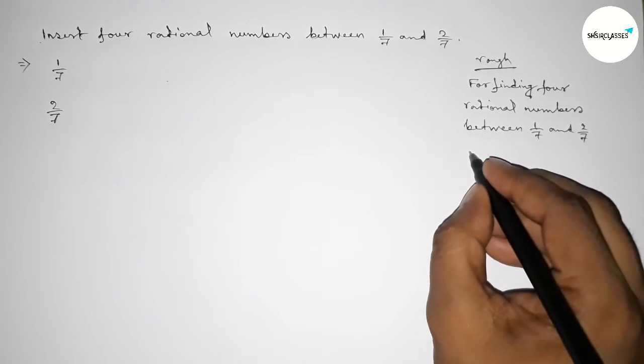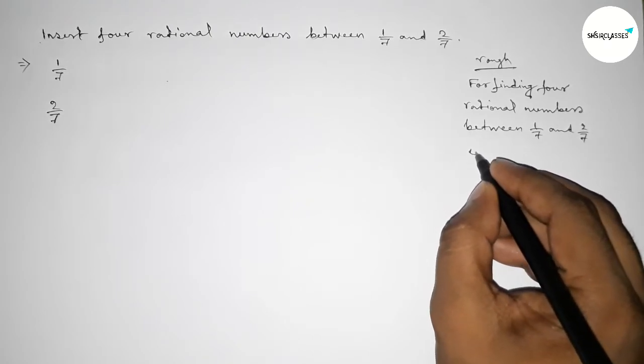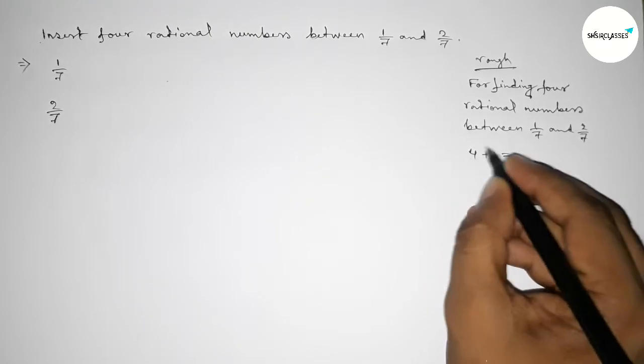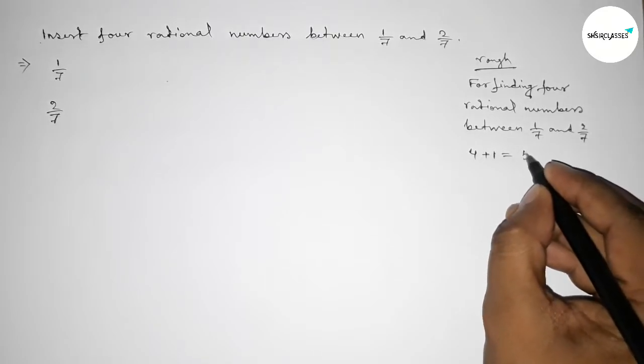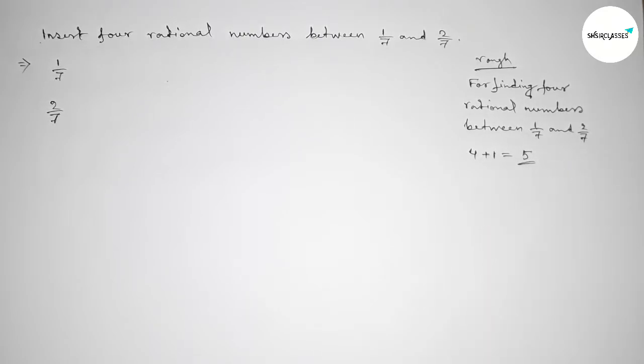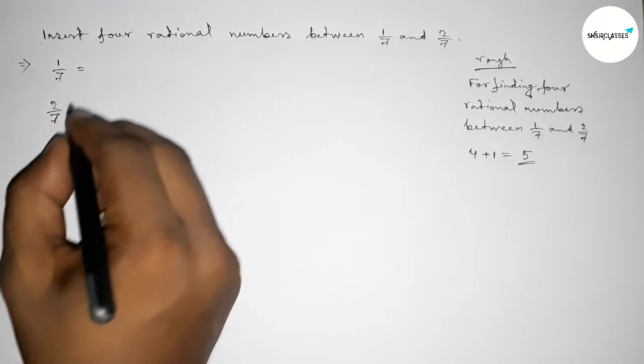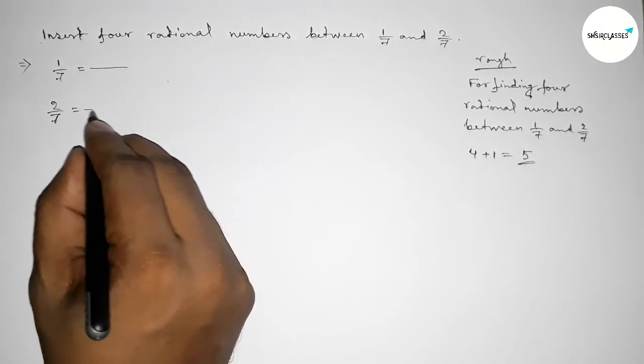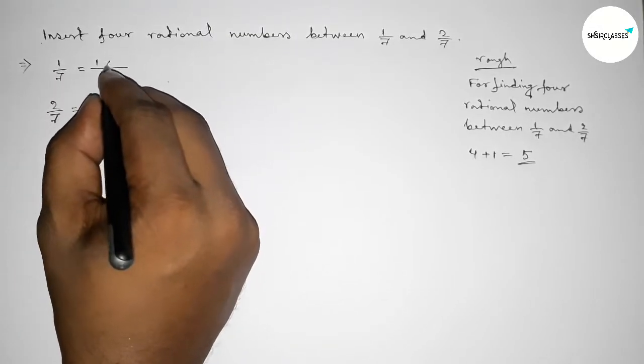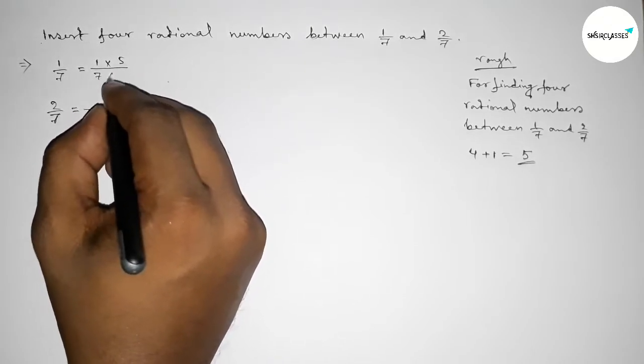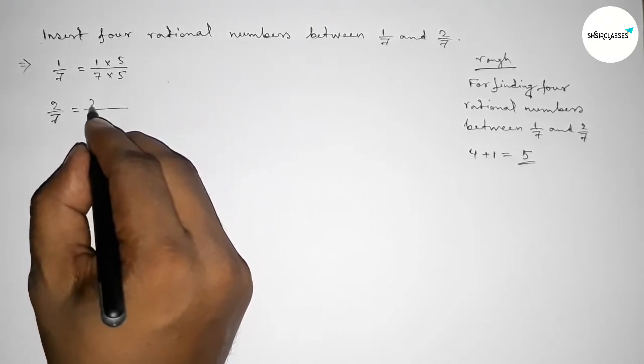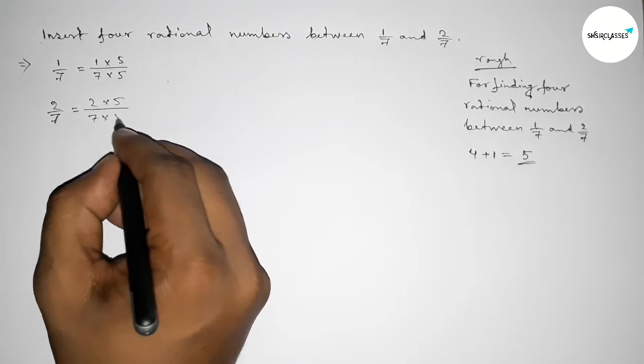We should multiply both numbers by 4 plus 1. So we have to multiply 4 plus 1 equals 5 with both numbers.